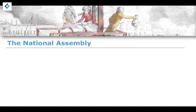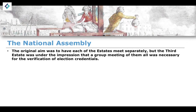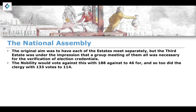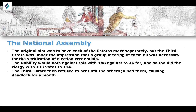How did the Estates General turn into what became known as the National Assembly? The original aim was to have each of the estates meet separately, but the Third Estate was under the impression that the group would be meeting all together for verification of election credentials. The nobility voted against this proposal 188 to 46, and so did the clergy with a vote of 133 to 114 — so slightly more contentious within the First Estate. The Third Estate then refused to act until joined by the others, causing a month-long deadlock at the Estates General.